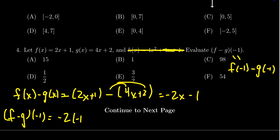Negative 2 times negative 1 minus 1. We're going to get positive 2 minus 1, and so we see that the value would be 1. Hence, the correct choice is B.